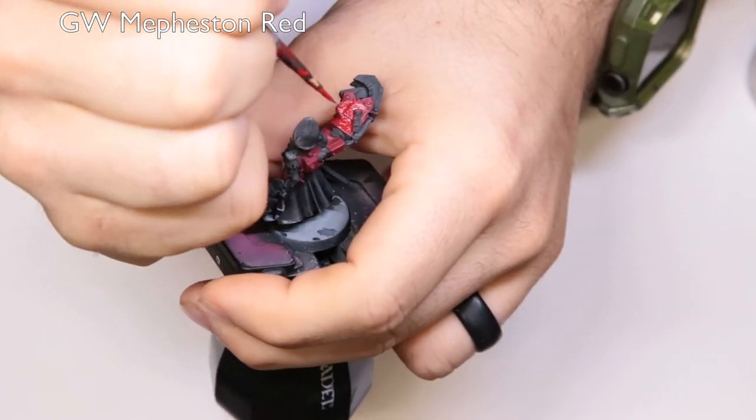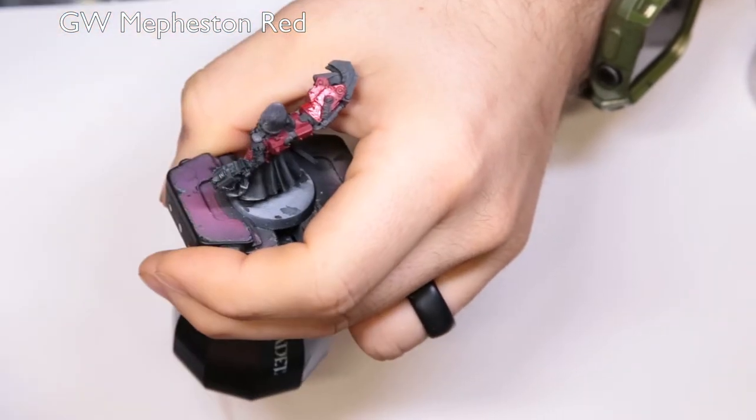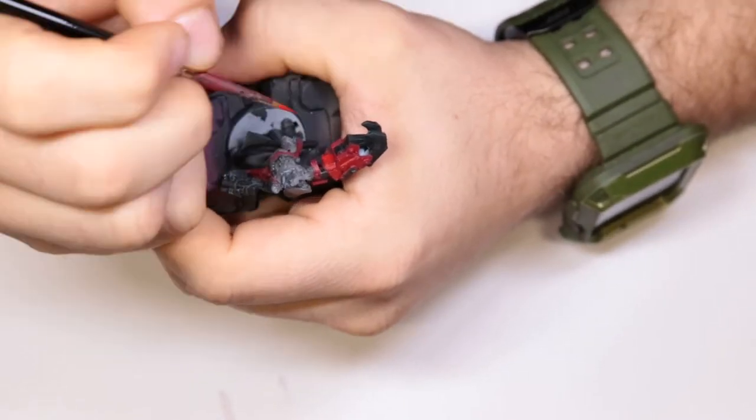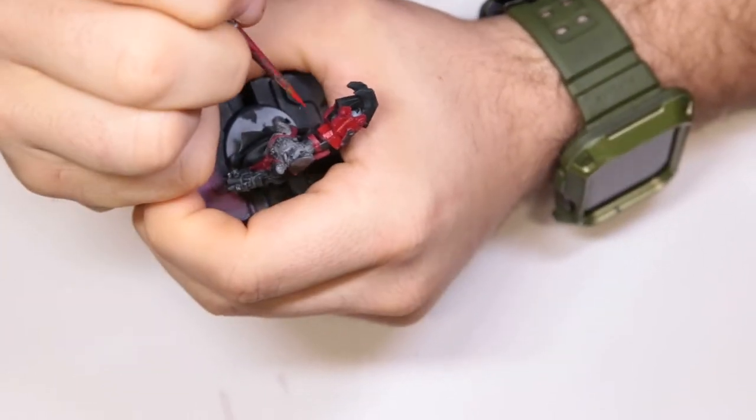We're doing the exact same thing here with Mephiston Red. We're just completely covering all the Khorne Red we did previously. Like I said, it wasn't to have any sort of shadows, anything like that. This is just to get that black to a red.